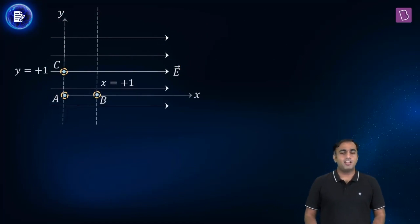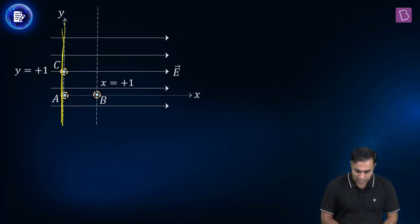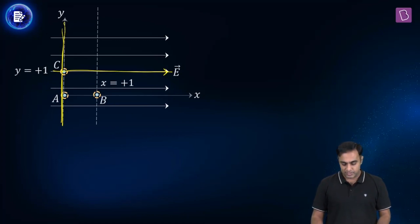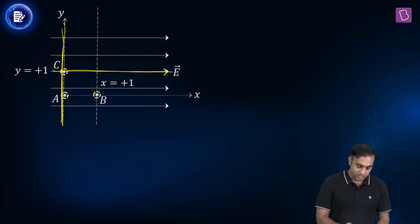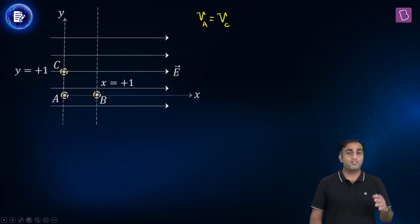Two facts are helpful here. First: if you draw a line perpendicular to the direction of the electric field, it is an equipotential line, meaning all points on it are at the same electric potential. The y-axis is perpendicular to the x-axis, which is the direction of the electric field. Therefore, all points along the y-axis are at the same potential, which means the potential at A equals the potential at C: VA equals VC.